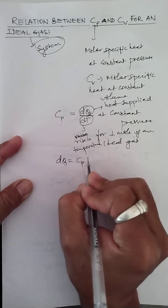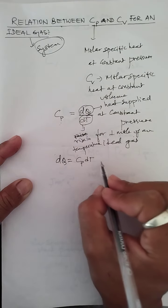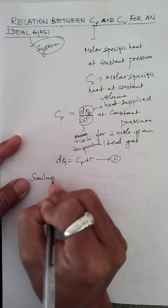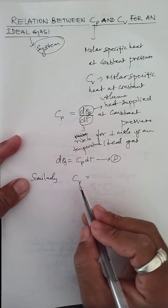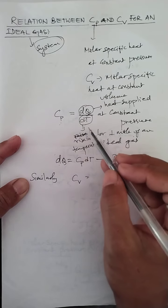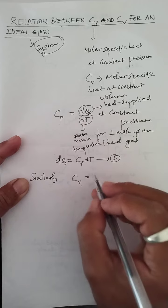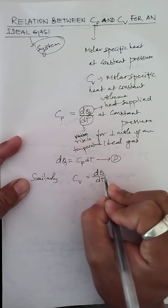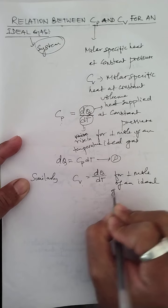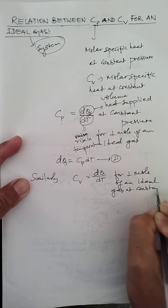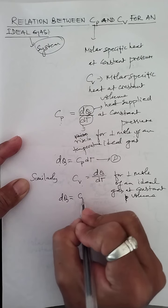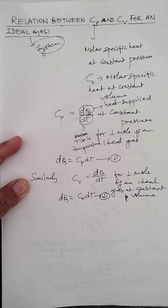So dQ = Cp · dT — let me call this equation one. Similarly, Cv is the molar specific heat at constant volume, defined as the amount of heat energy required to raise the temperature of one mole of an ideal gas through one degree Celsius or one Kelvin when the volume remains constant. Mathematically, Cv = dQ/dT at constant volume, so dQ = Cv · dT — equation two.